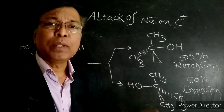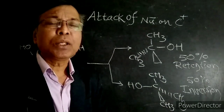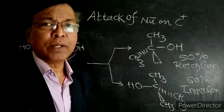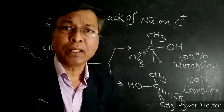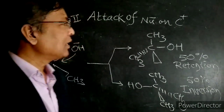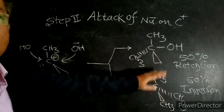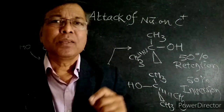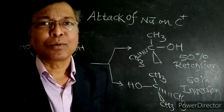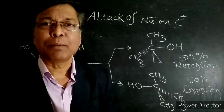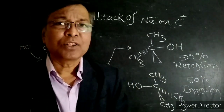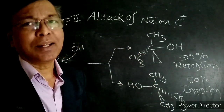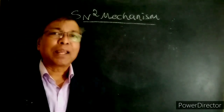The total mixture is called a racemic mixture. In SN1 reaction mechanism we get a racemic mixture. A racemic mixture is the equimolar mixture of dextrorotatory and levorotatory substances which is optically inactive. To summarize: S stands for substitution, N stands for nucleophilic, and 1 stands for unimolecular reaction.